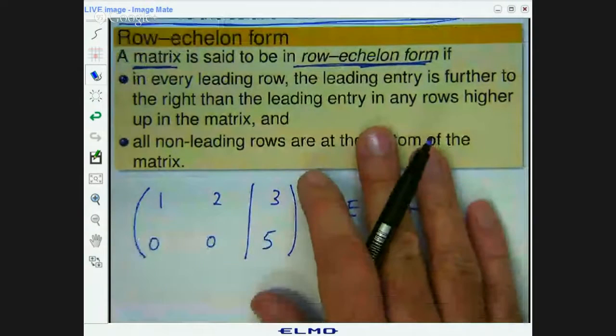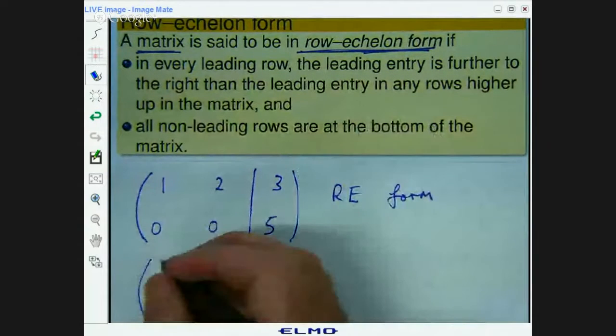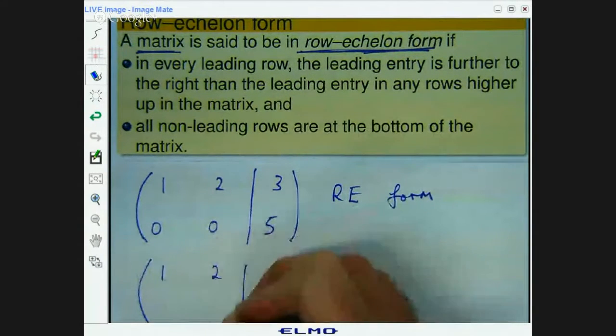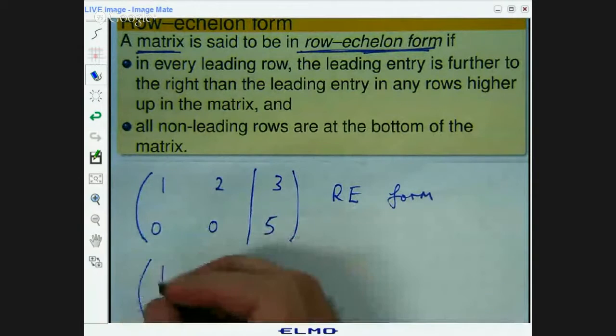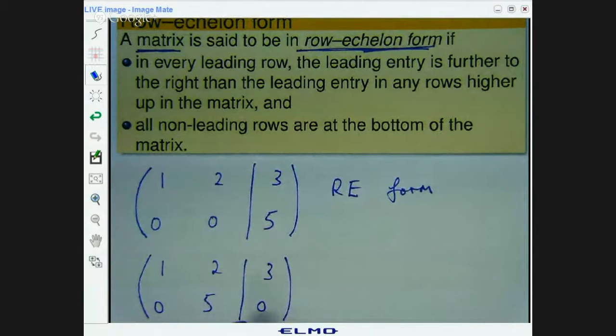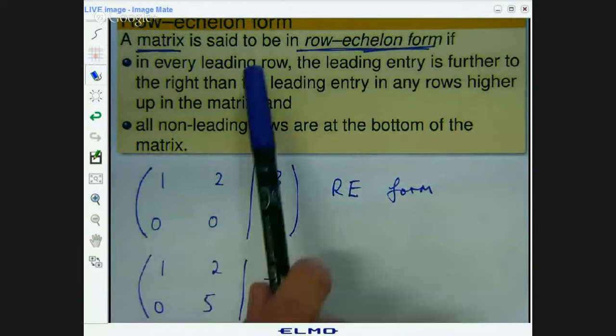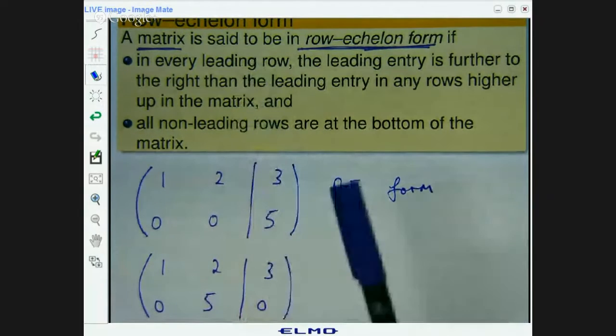Okay, now the more of these you do, the better you'll get at them. All right, let's do another one. What about this matrix? This augmented matrix. Is this in a row echelon form?